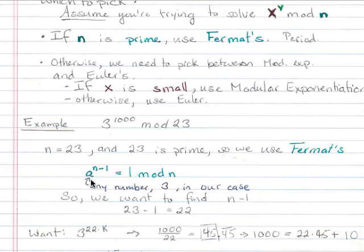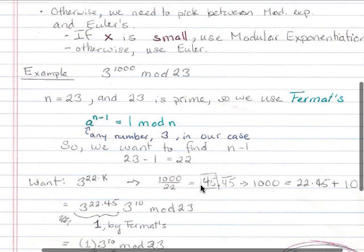Therefore a, any number, 3 in our case from right here, to the n minus 1, which is 23 minus 1, 22, will equal 1 mod n, mod 23, because 23 is prime.